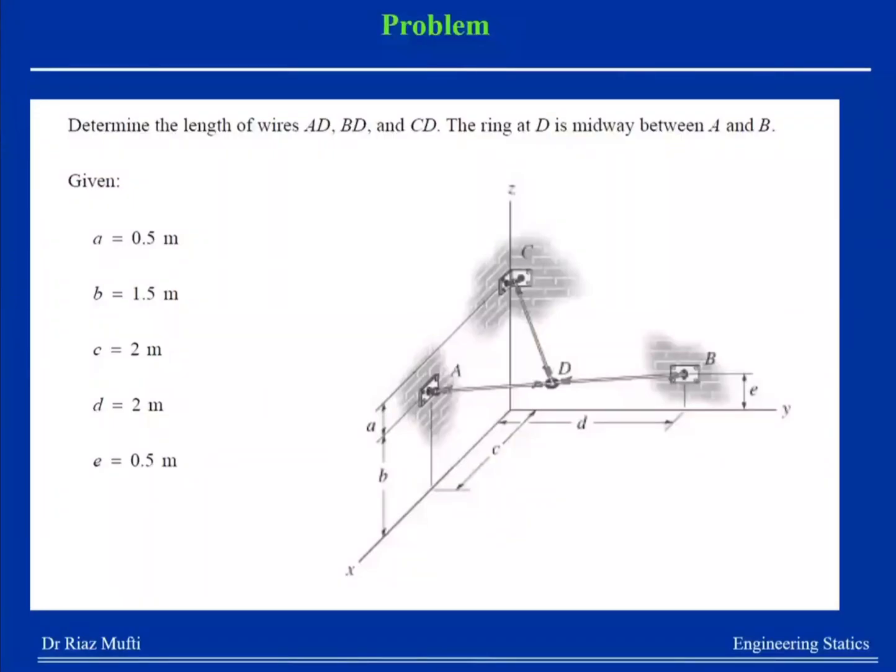Determine the length of wire AD, BD, and CD. The ring at D is midway between A and B, so midway means it is half c.